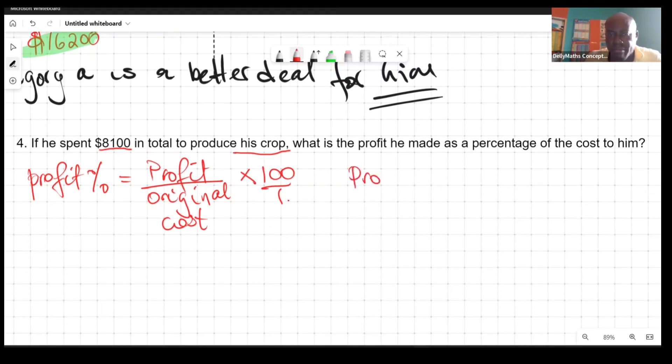If you want to know the profit that he made as a percentage, you need to know what the profit is. The profit is after he has sold it for $16,200, you need to take from it what it costs him. When you subtract this, we are getting $8,100 as well. The profit he made was $8,100. The profit you have to take away what you spend to know the extra, so the extra that he made is your profit.